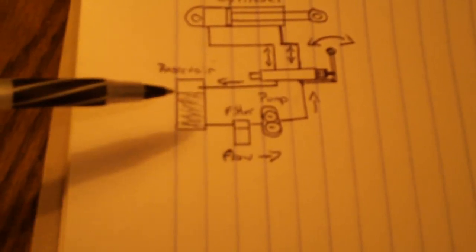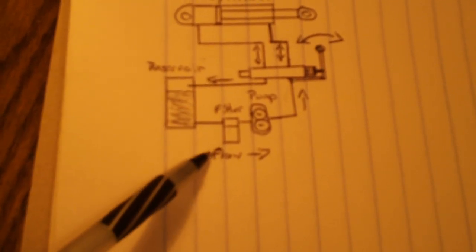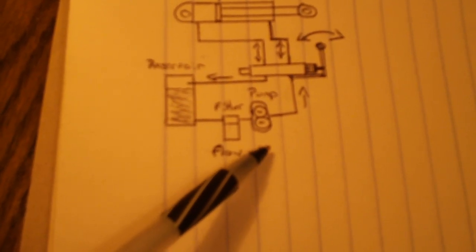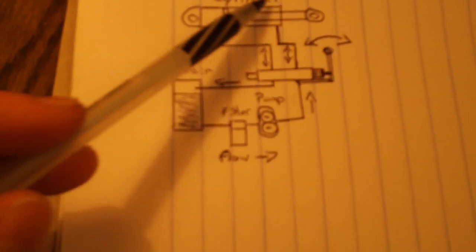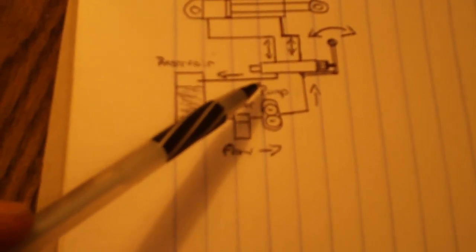So, moving on, here is your reservoir, and then your direction of flow here is indicated by these arrows. And you have a filter, you always have to have a filter because stuff will get in there no matter how good the seals are.